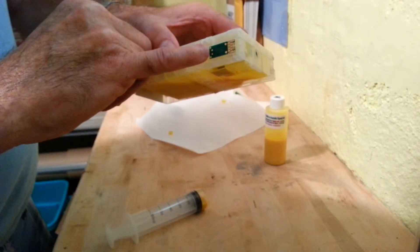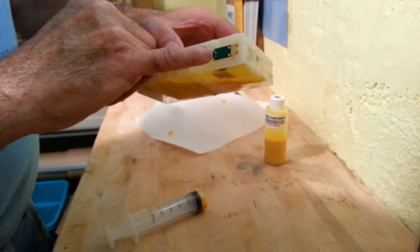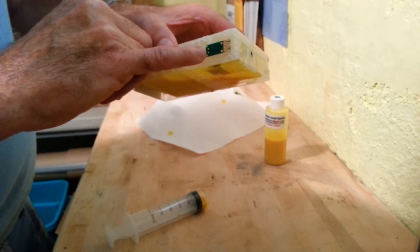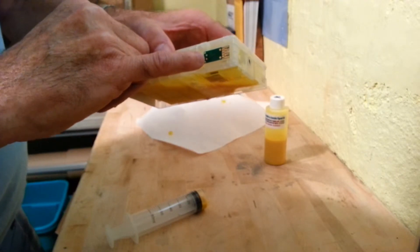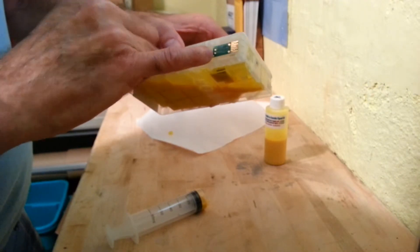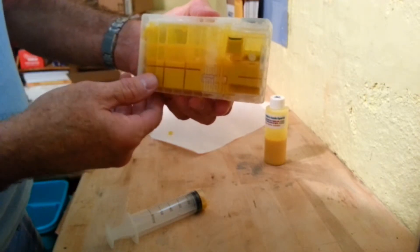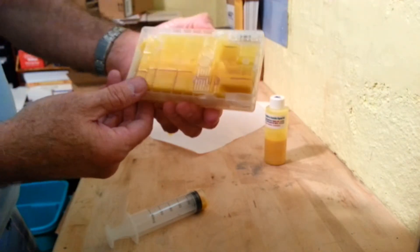In order to reset the cartridge, you're going to simply take a paper clip and short out the two gold contacts for five seconds. That resets the chip back to full, and then the chip will indicate that the cartridge is refilled. You'll do that each time you refill the cartridge.